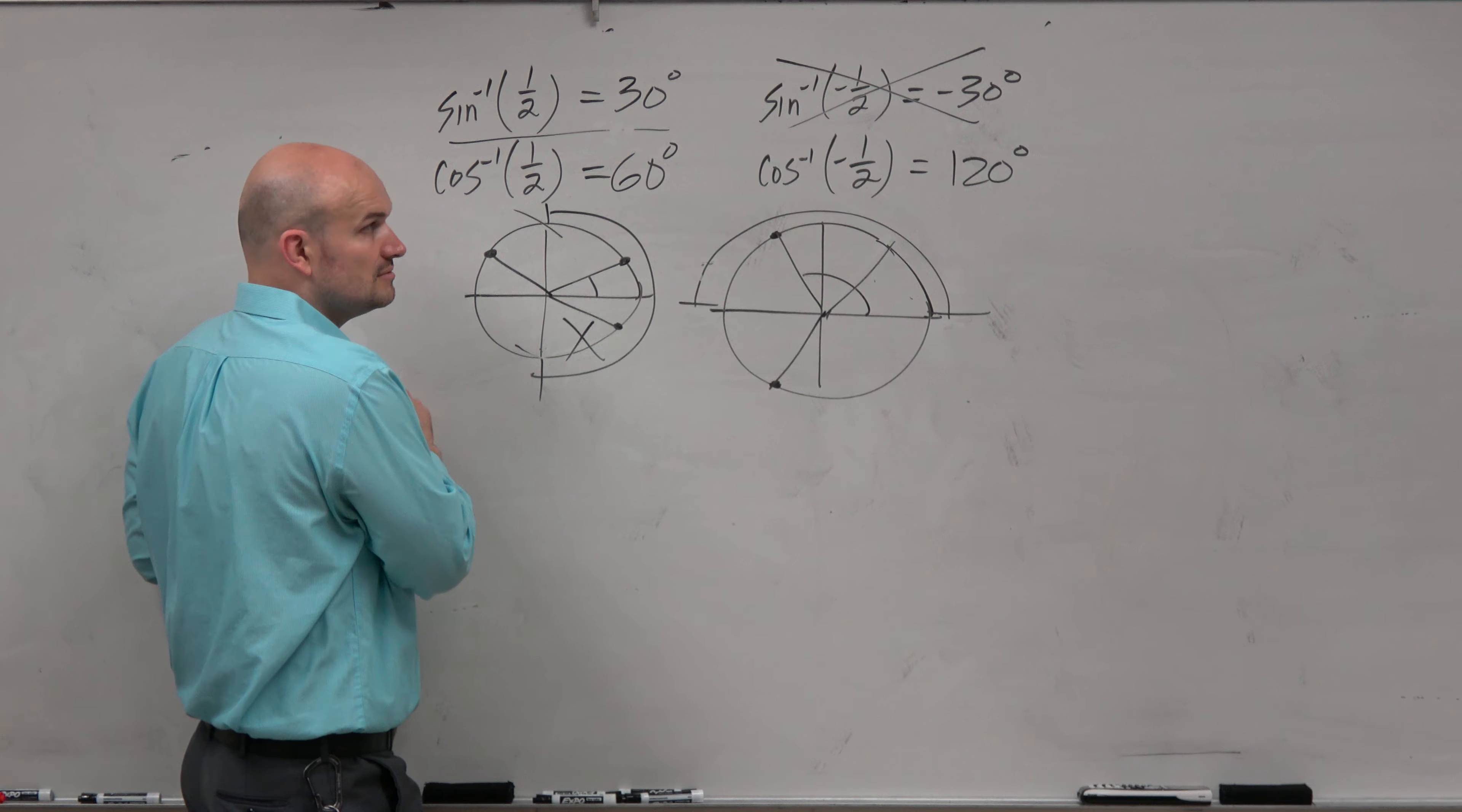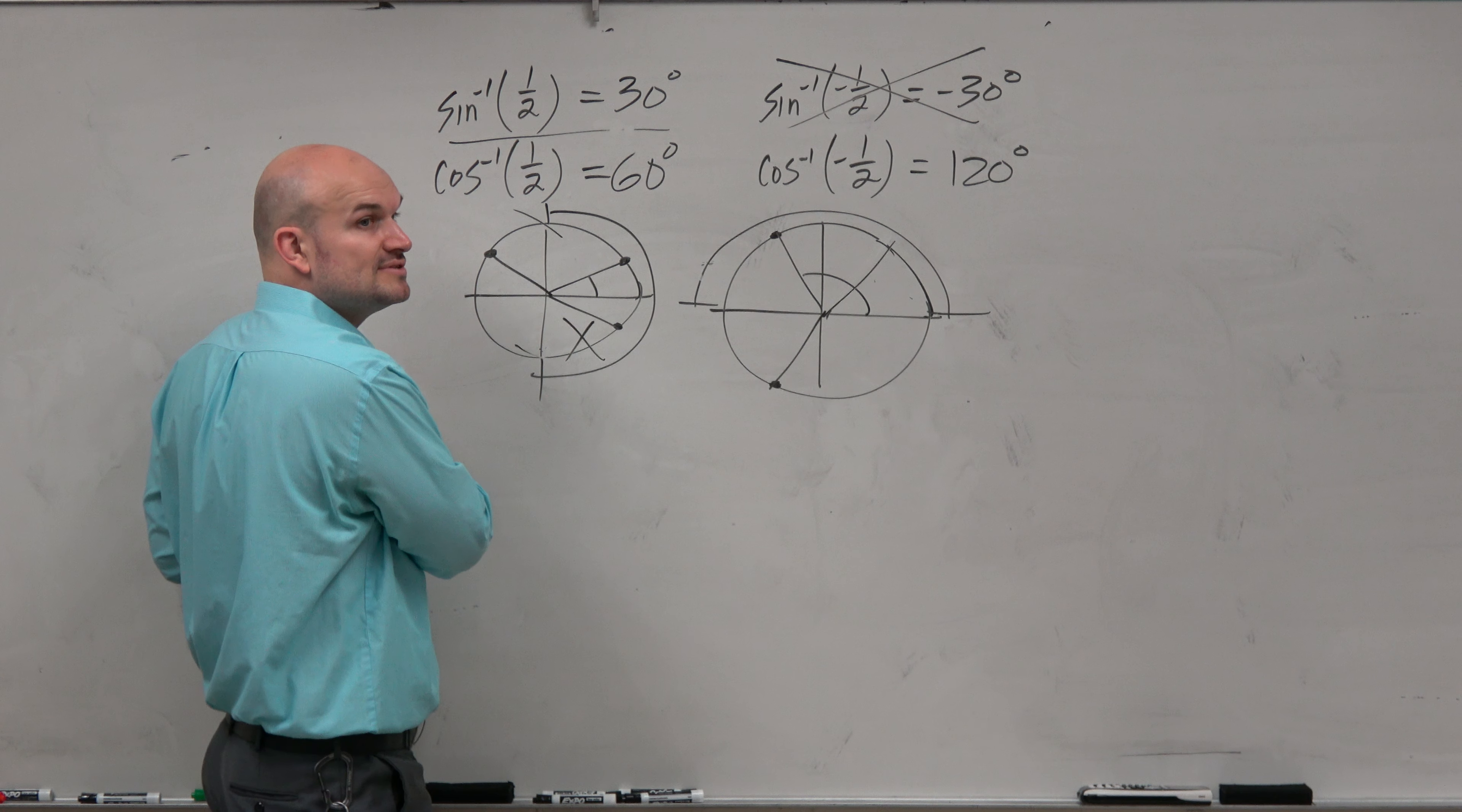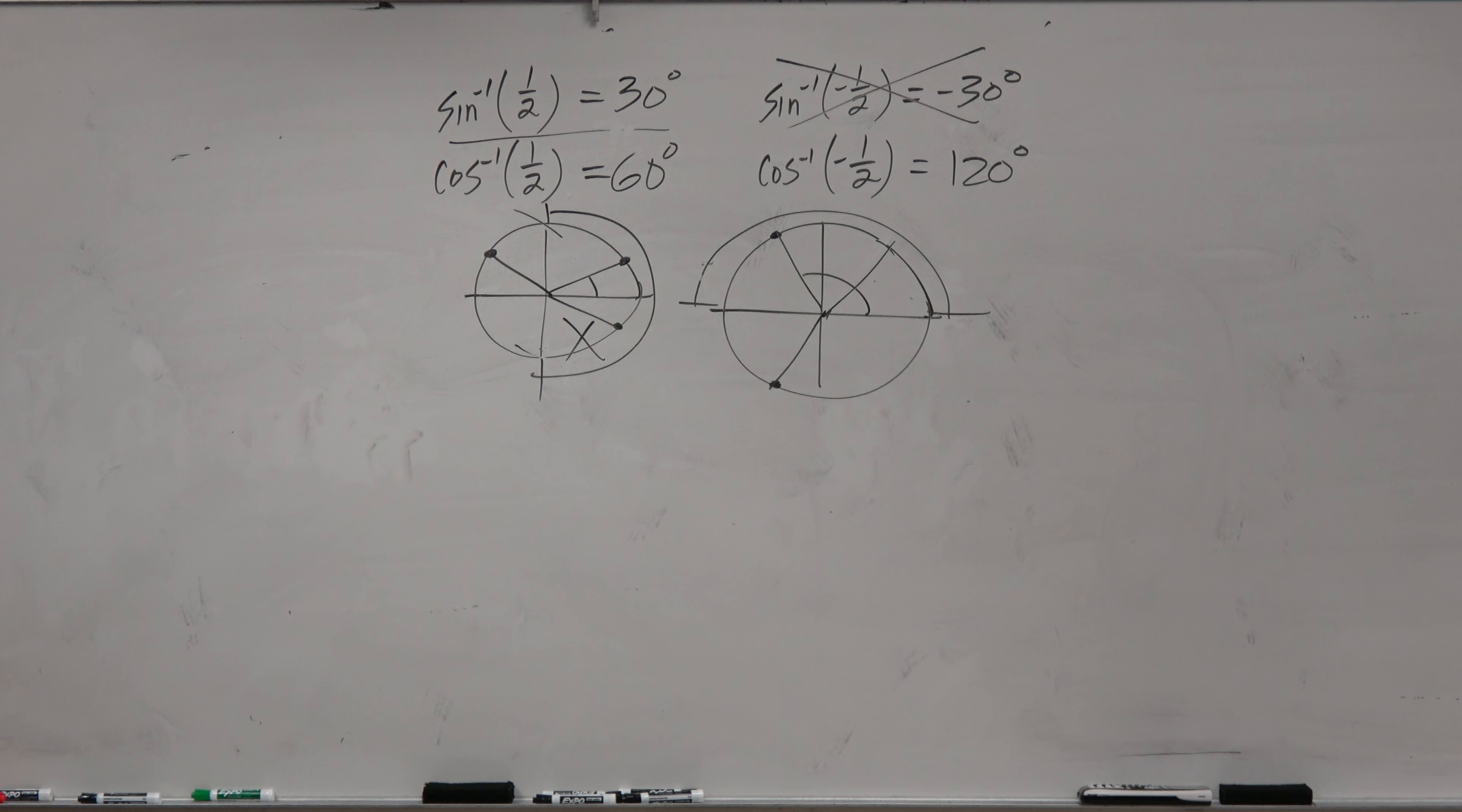For cosine, though, that tells us if we have an obtuse angle, it's going to tell us. So we don't have to worry about that. So that's good. So if we use inverse sine, we use the law of sines. So if we're going to be using inverse cosine, that's going to come from the law of cosines. So there's your new rules.